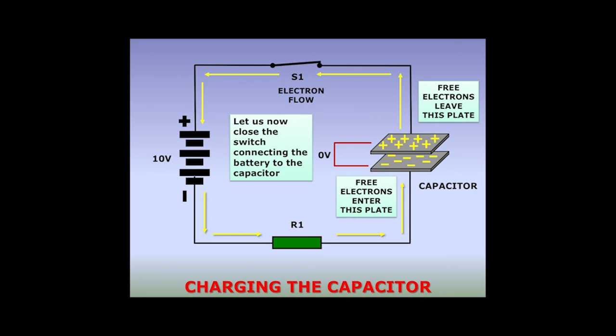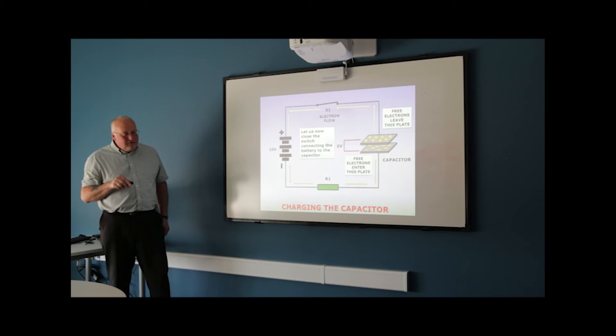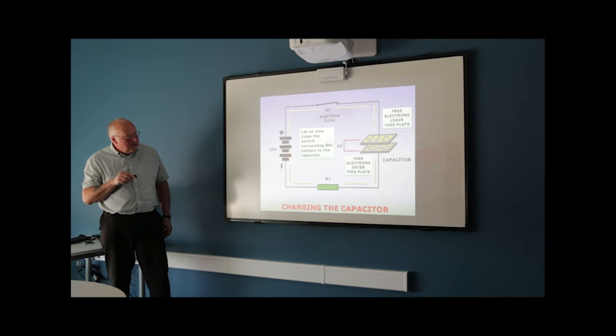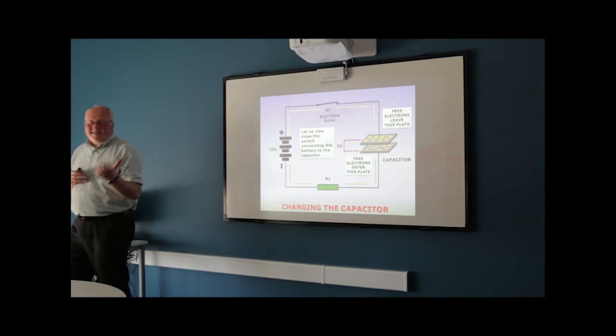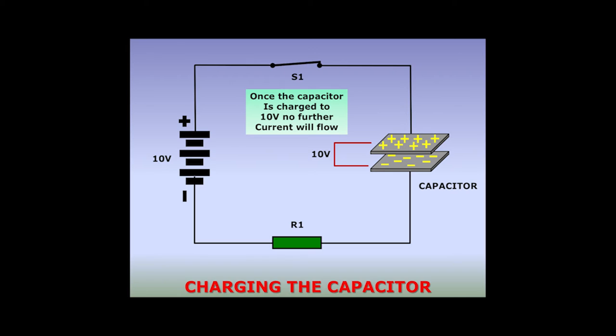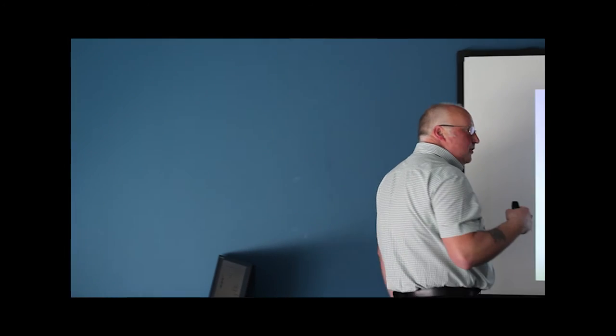The capacitor now has a positive plate and a negative plate. As current flows, the potential difference across the capacitor rises from zero volts. As it rises toward the 10-volt supply, when the capacitor voltage reaches 10 volts there is no longer a potential difference between the capacitor and the battery. With no potential difference, no current will flow — the voltage builds across the capacitor until it reaches 10 volts, at which point current ceases.